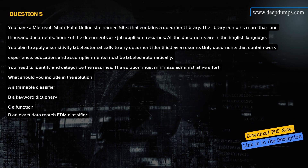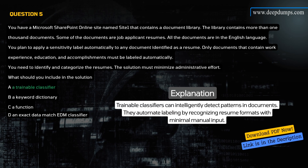Question 5. You have a Microsoft SharePoint Online site named SiteOne that contains a document library with more than 1,000 documents. Some of the documents are job applicant resumes in English. You plan to apply a sensitivity label automatically to any document identified as a resume — only documents that contain work experience, education, and accomplishments must be labeled automatically. You need to identify and categorize the resumes while minimizing administrative effort. What should you include in the solution? A) A Trainable Classifier, B) A Keyword Dictionary, C) A Function, D) An Exact Data Match (EDM) Classifier. Correct answer is A. Explanation: Trainable classifiers can intelligently detect patterns in documents and automate labeling by recognizing resume formats with minimal manual input.